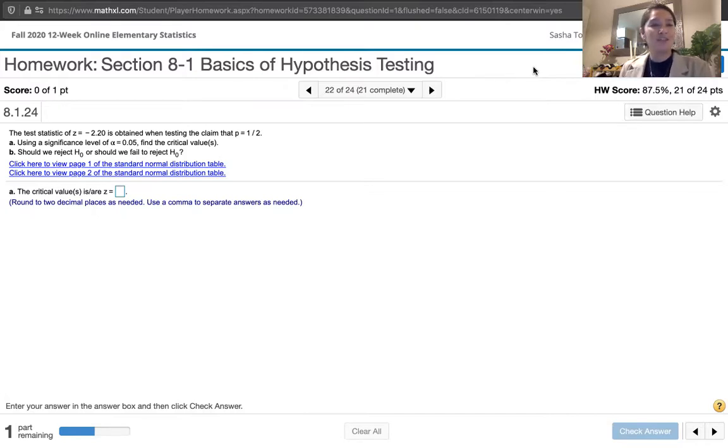In part A, we're asked to find the critical values when we're using a significance level of alpha equals 0.05. And then in part B, we're asked if we should reject the null or fail to reject the null. So I'm going to share my paper with you so we can talk this through, and then we'll come back here and use the standard normal distribution links that they've given us.